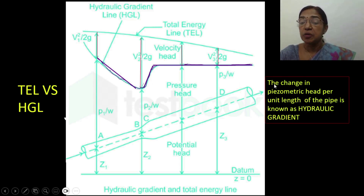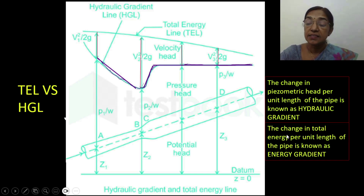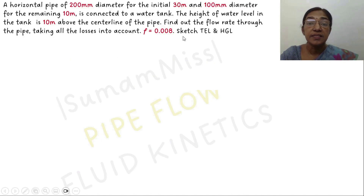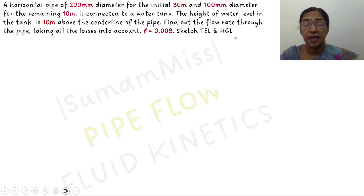The change in piezometric head per unit length of the pipe is known as the hydraulic gradient, whereas the change in total energy head per unit length of the pipe is known as the energy gradient. This can be explained in more detail by solving a problem.